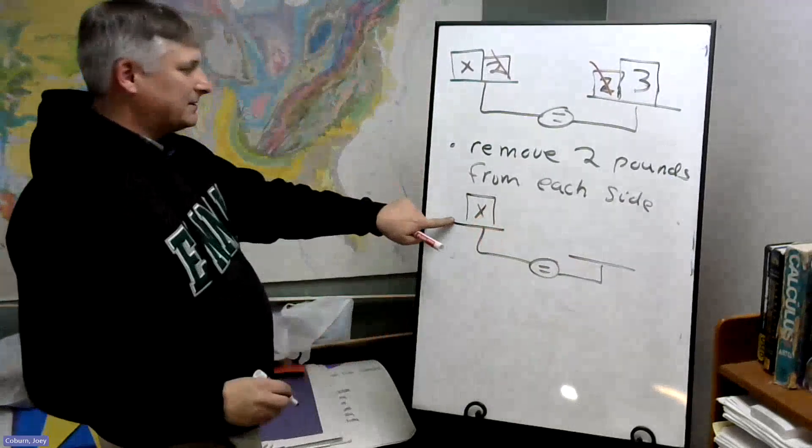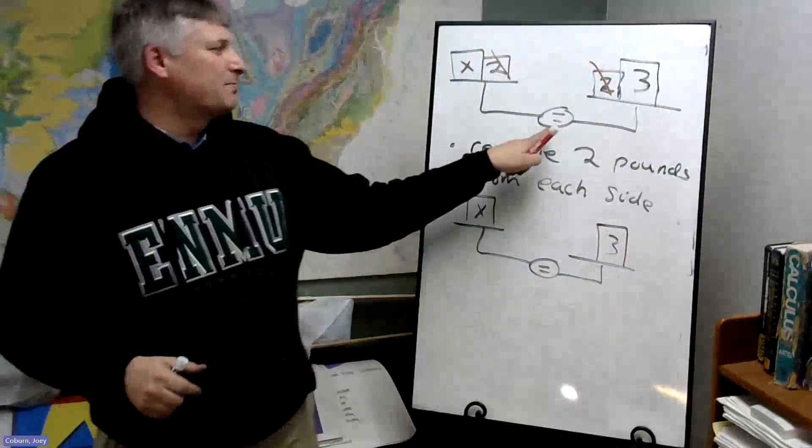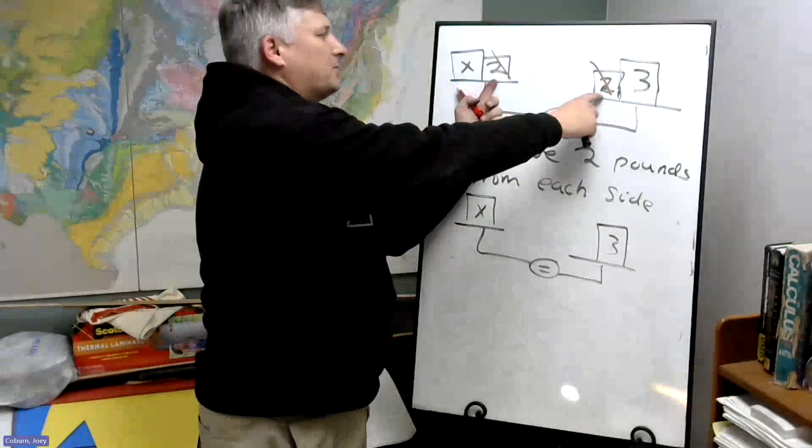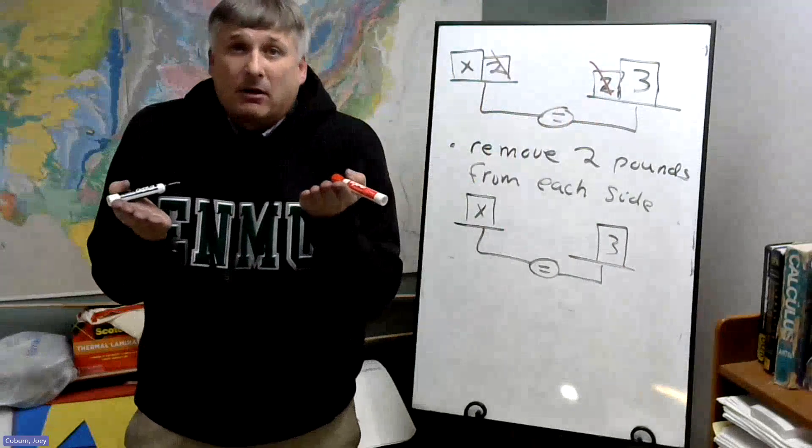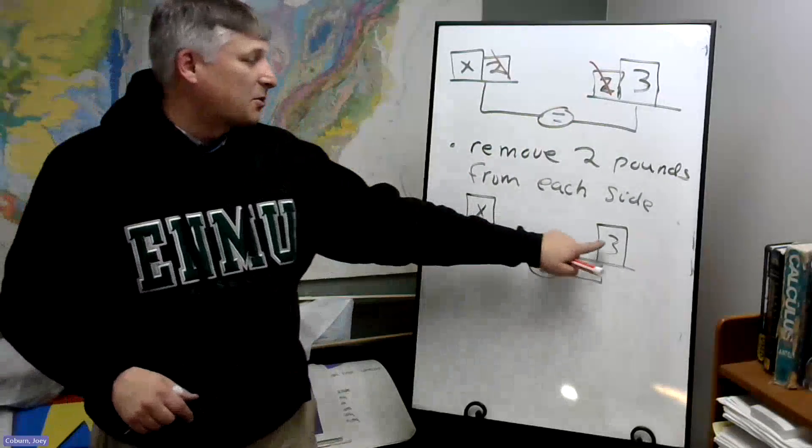Well, now X is by itself. And there's three pounds on the other side, and since this was balanced and we removed two pounds from both sides, it will stay balanced. So what weight balances X? It's three.